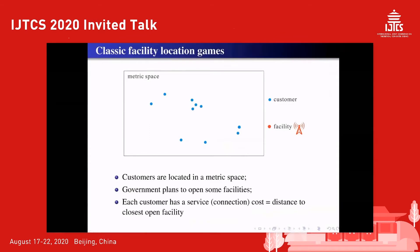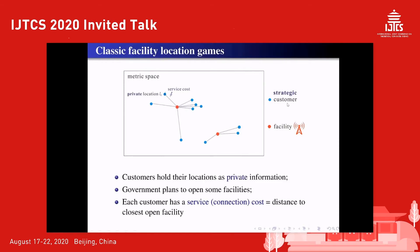The classical facility location games model the following scenario. The government plans to build some public facilities in a metric space, while some self-interested customers are located. Given the open facilities indicated by the small red disks, each customer has a service cost or connection cost equal to the distance to their nearest open facility. The customers are strategic agents who have their own location r_i as private information, and will strategically report location r_i as b_i in order to minimize their own service cost, because the location of open facilities will be determined by the reports from all agents.